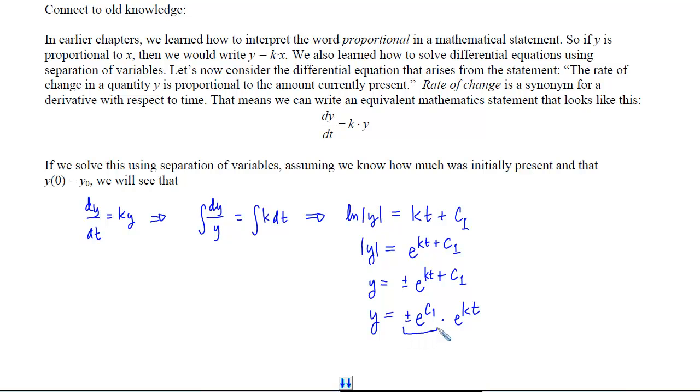Now notice that we have yet to plug in our initial condition. So this right here is still a random constant. We haven't figured out what it is. So because it's a random constant, we can rewrite it a little more simply and call it c sub 2. Now we are ready to plug in our point, which is when t is 0, we get an output of y sub 0. When I do that, I'll get y sub 0 equals c sub 2 times e to the 0.